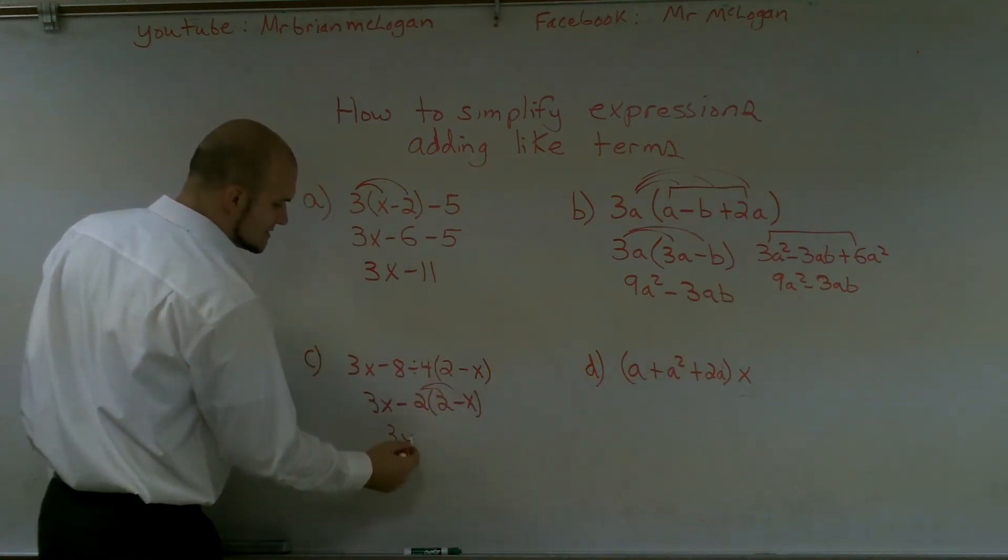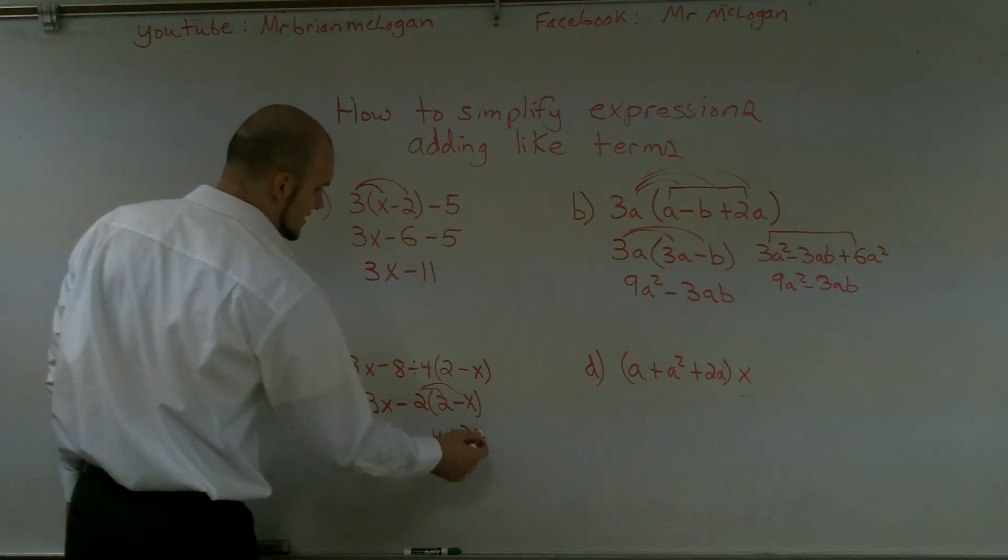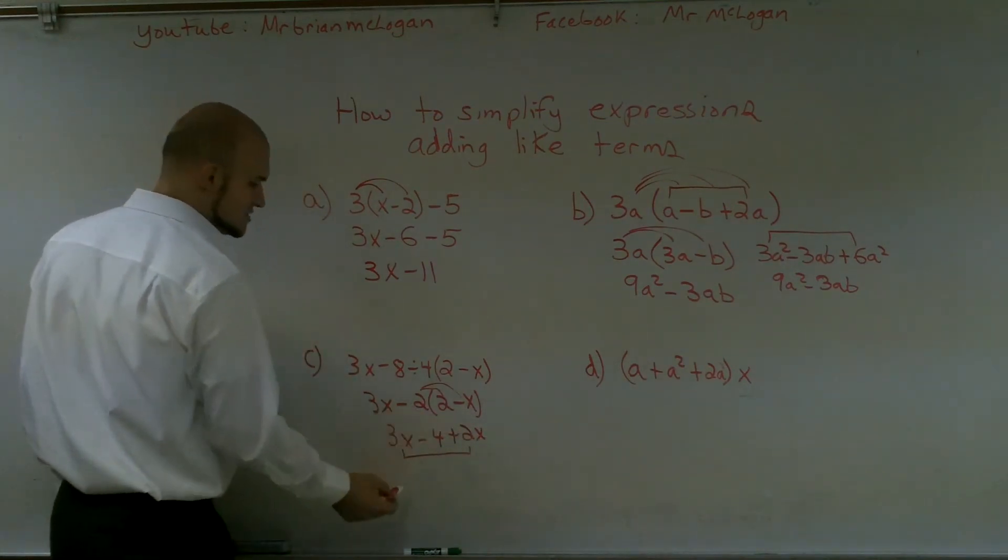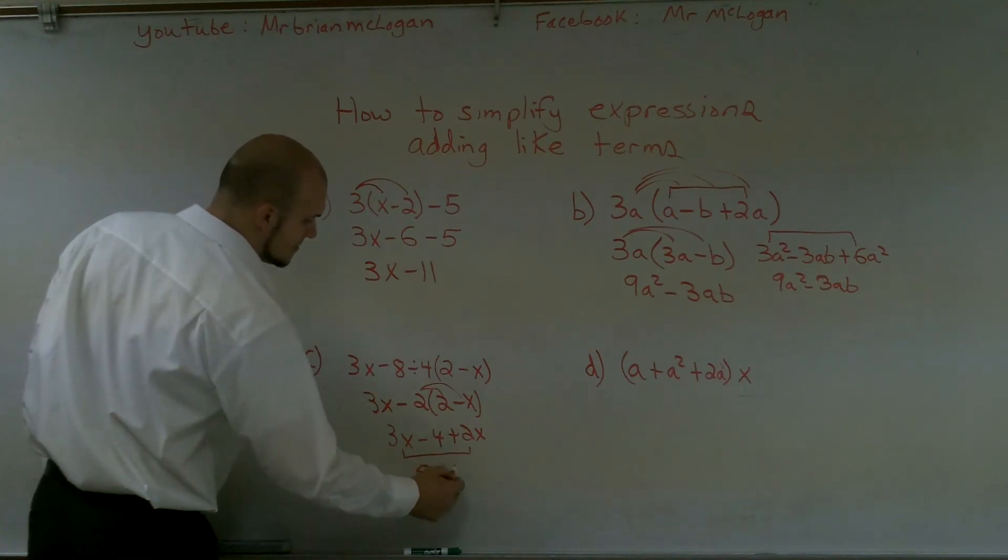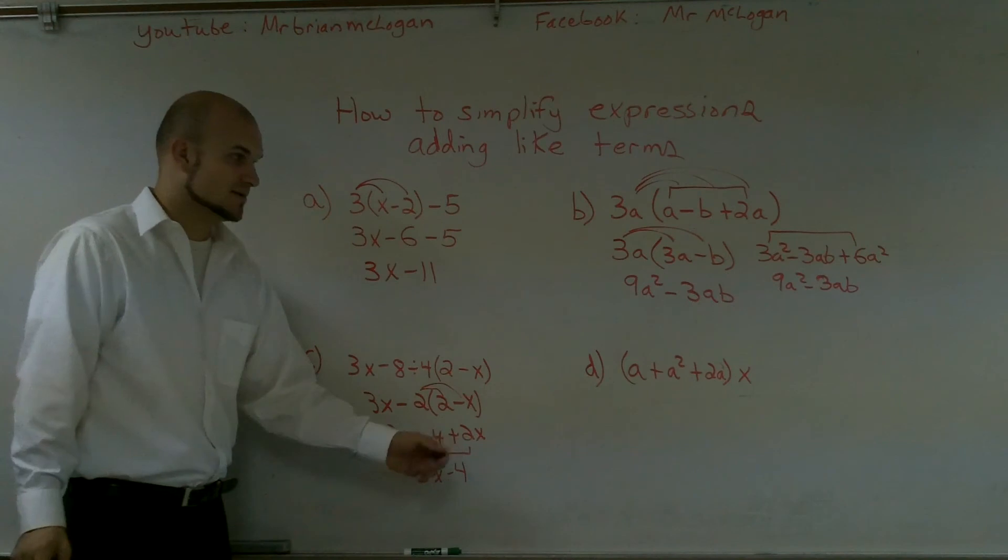Now I can use my distributive property. So I get 3x minus 4, and that's a negative 2 times a negative x, which is a positive 2x. And then now I can combine these two terms, 3x plus 2x is 5x minus 4. Again, notice, I'm not combining my 5x and my 4.